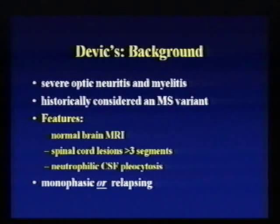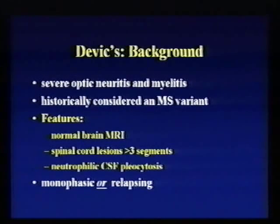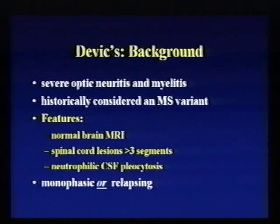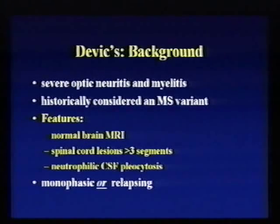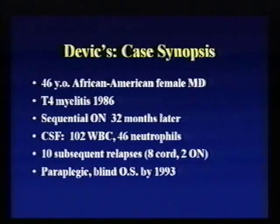The other thing about Devic's that makes it interesting, but also unfortunately devastating for some, is that it can follow a relapsing course. It can be monophasic — that is, have one set of events and then no relapses, as transverse myelitis often does — but it can also be relapsing, meaning people can continue to have more attacks of both myelitis and optic neuritis over time.